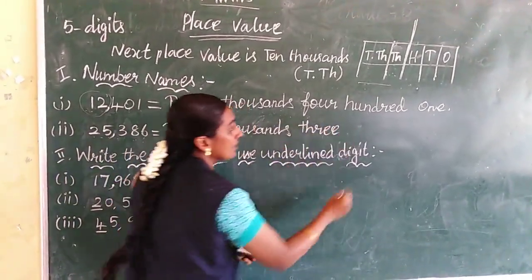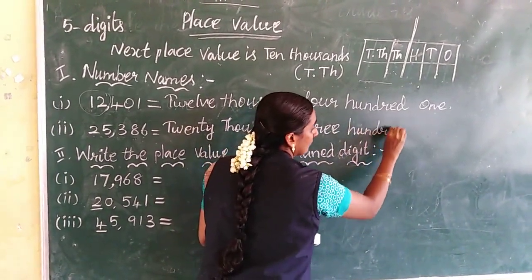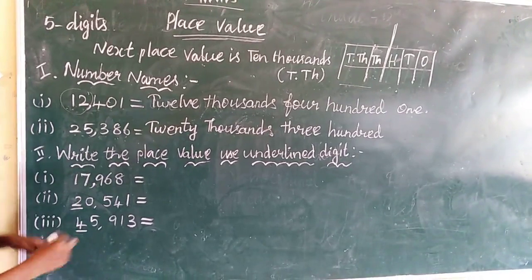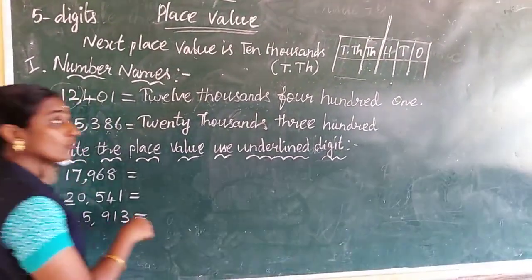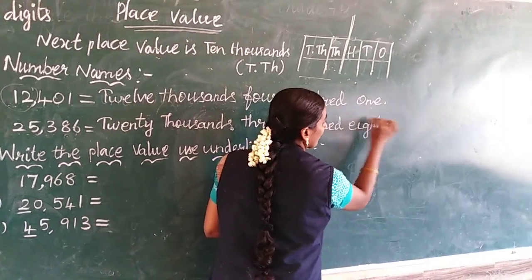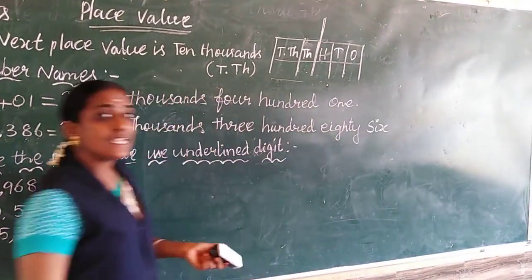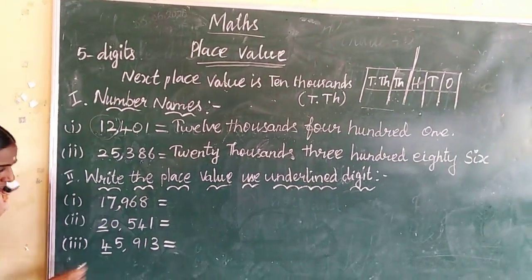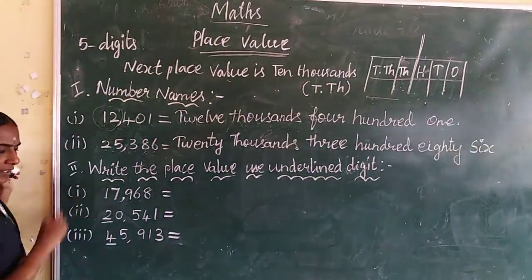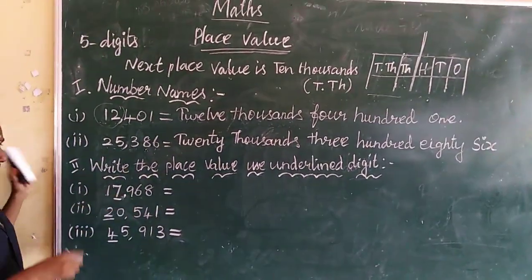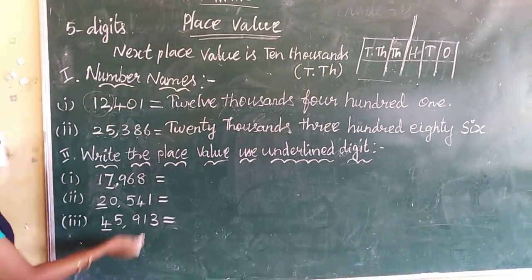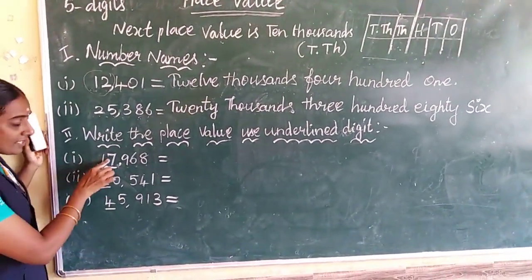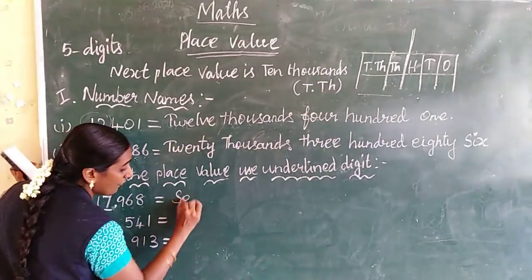Three hundred. Next one — tens place is eight, so eighty. Eighty-six. Next one, we go to write a place value with underline. Look at the first one: six hundred. Eight means tens place is hundred-thousands in this one.